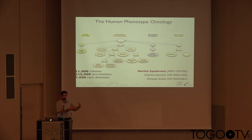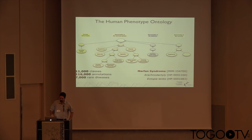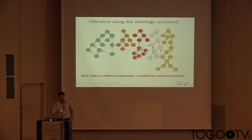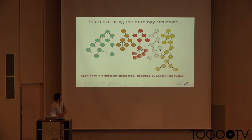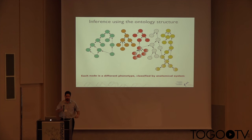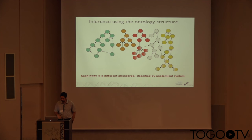How can this help us match the patient to diseases? By using what ontologies are best for — inference. You can treat each node in the ontology as a phenotype associated with a particular anatomical system, and then use disease profiles to create a phenotypic profile by associating the disease with different nodes in the ontology.